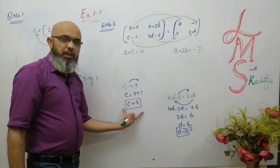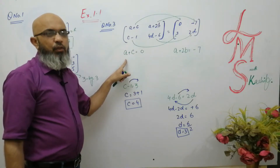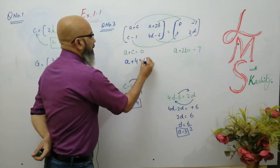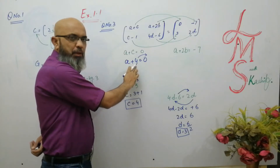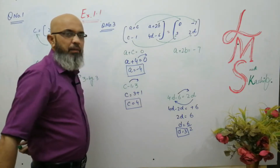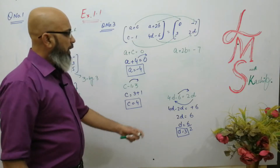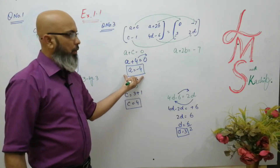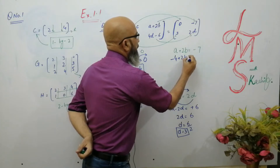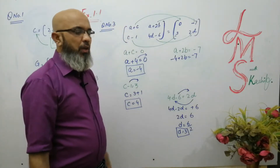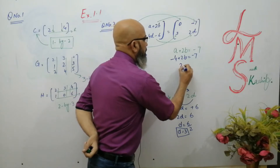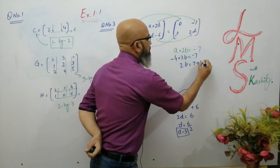Now substituting a = −4 into a + 2b = −7: −4 + 2b = −7. Move −4 to the other side: 2b = −7 + 4. Now the signs are different, so we subtract. Always put the sign of the larger value. So 2b = −3. Divide by 2: b = −3/2. Use your calculator — the answer is −1.5. Always take your calculator with you to my lecture or to school, because in 9th grade the calculator is allowed.